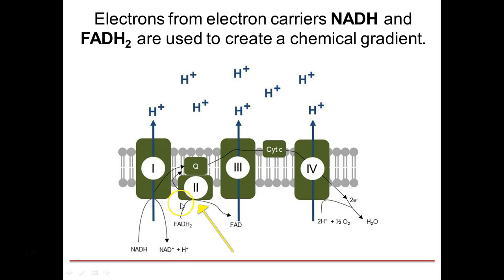Complex 2 receives FADH2, which is also an electron carrier. It's able to bypass the first complex because it has a lower redox energy compared to NADH and delivers electrons directly into the electron transport chain. Ubiquinone accepts the electrons from both complex 1 and complex 2 and delivers them into complex 3.